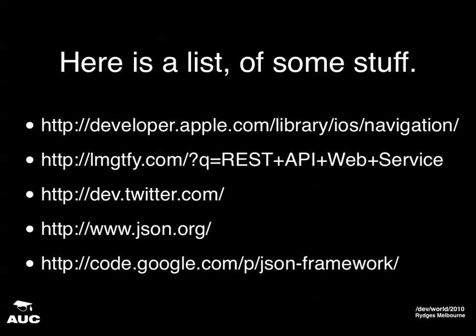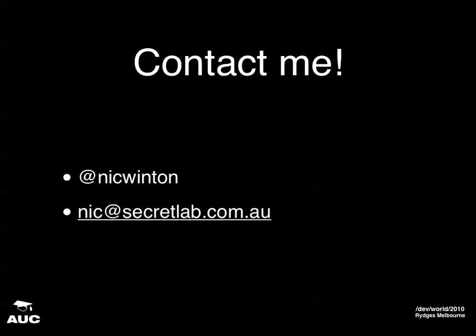Here's a list of some important stuff you should probably remember. The iOS Developer Library is where you find all the documentation — that's also in Xcode. A little bit of information on REST APIs if you need more about that. You can go to dev.twitter.com to find all the APIs used in this talk. Go to json.org to find out more about JSON. And the SBJSON framework is found at the last link there. If you want to talk to me, you can find me at twitter.com/NickVinton. Send me a tweet — I'm happy to talk about projects. I'm also part of Secret Lab, so feel free to send me an email.